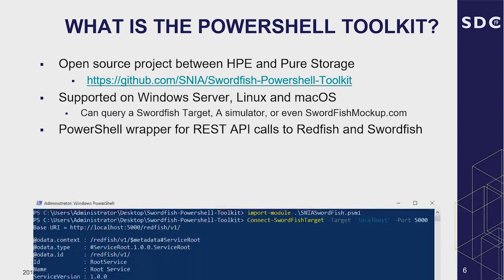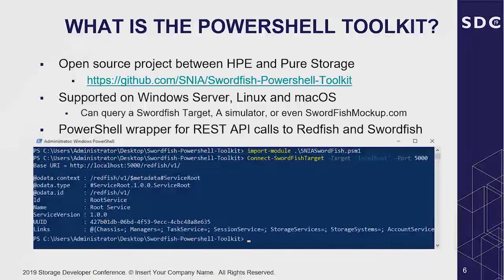You can run very simple commands: import the module, then say Connect-SwordfishTarget. You give it the target name and the port. By default it goes to localhost and port 5000, but you can point this to any Swordfish target in the world — whether it's a simulator, an emulator, or the Swordfish mockups. If you've got a Swordfish target, this will talk to it.